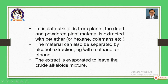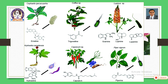The material can also be separated by alcohol extraction — for example, methanol or ethanol. The extract is evaporated to leave the crude alkaloid mixture. These are the sources and examples of alkaloids which exist in these natural resources. Just go through this slide — several naturally occurring alkaloids are listed there and they are of quite importance.